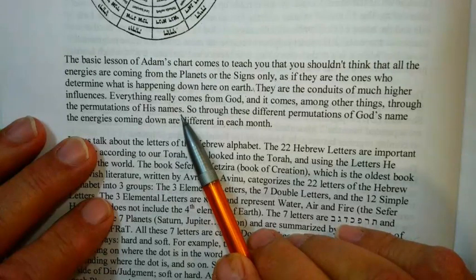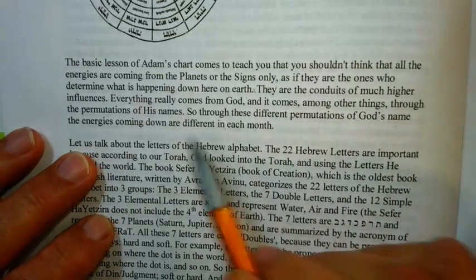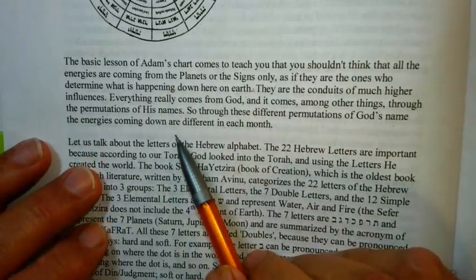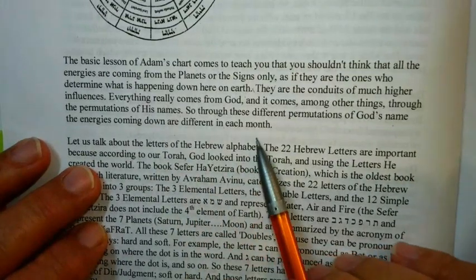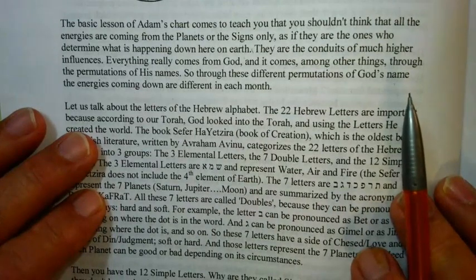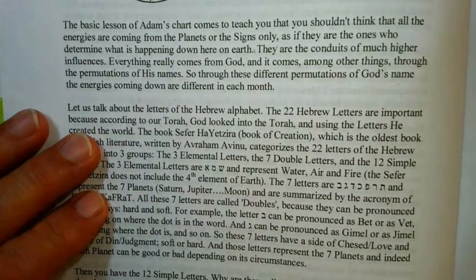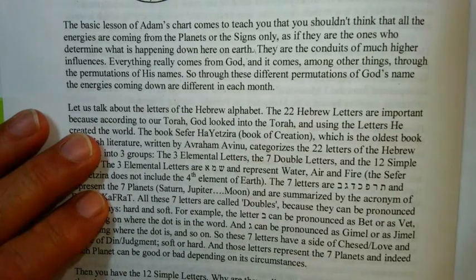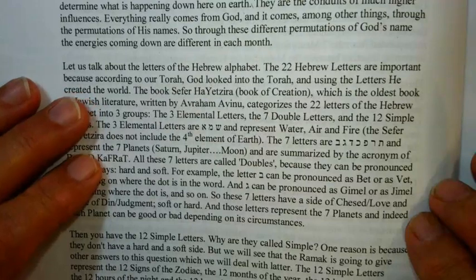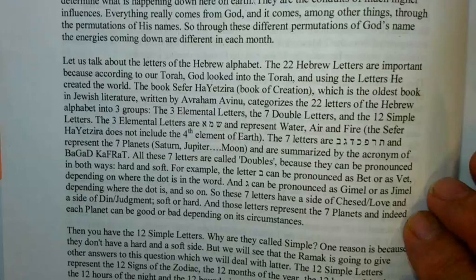I'm just trying to reason according to what he's saying and understand it for myself. Through these different permutations of God's name, the energies come down. The energies that are coming down are different in each month because the name also is revolving — all four letters of the name Yud-Keh-Vav-Keh are revolving and changing. That is part of the world we live in.